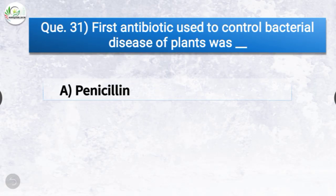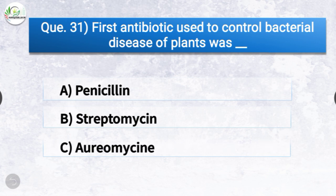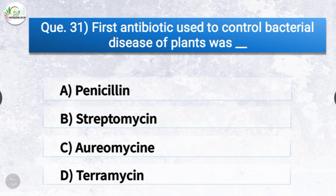Question number thirty-one: First antibiotic used to control bacterial disease of plants was dash. The options are penicillin, streptomycin, oreomycin, or terramycin. The correct answer is option B, streptomycin. The first antibiotic used to control bacterial disease of plants was streptomycin.